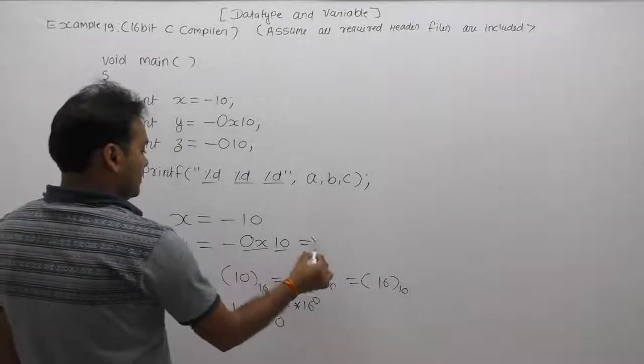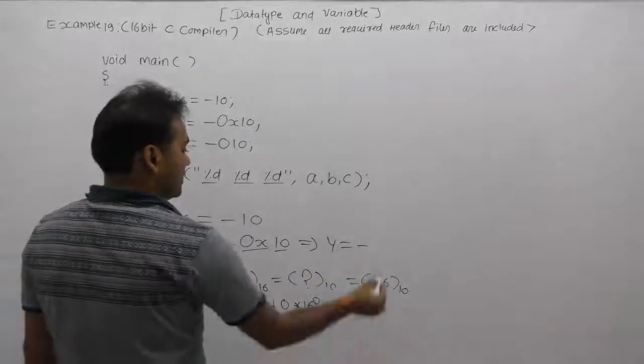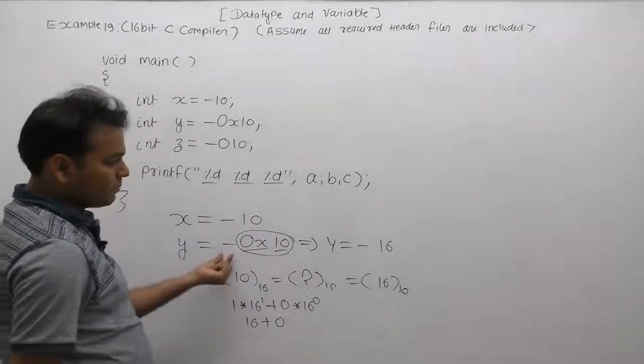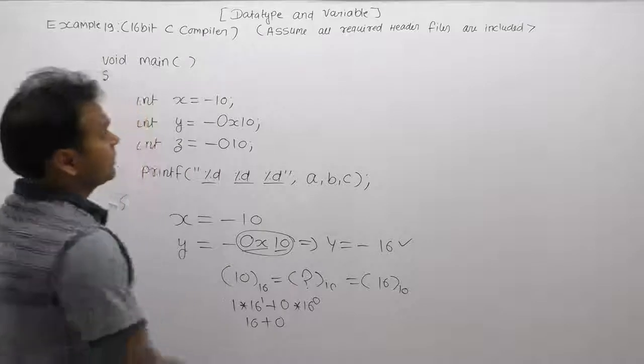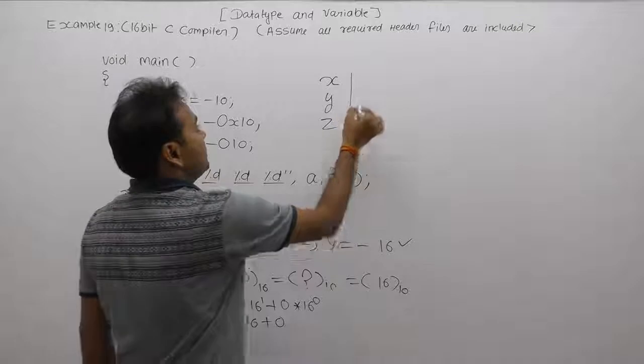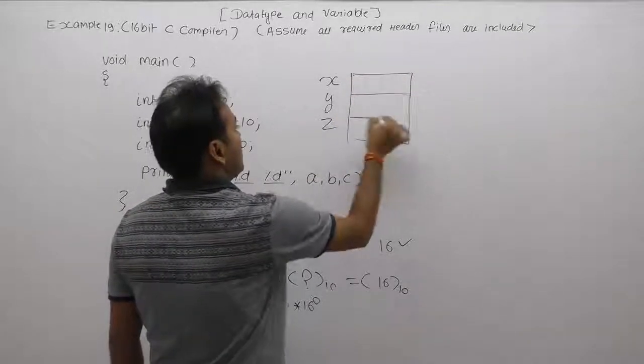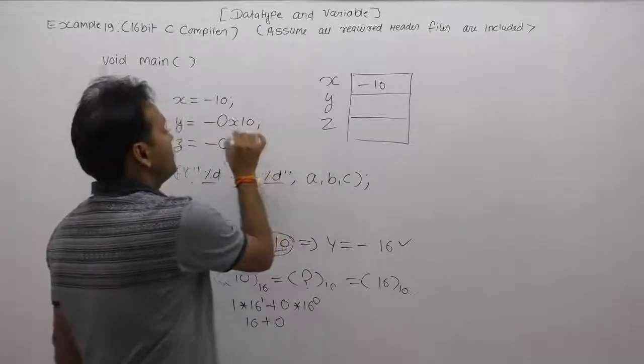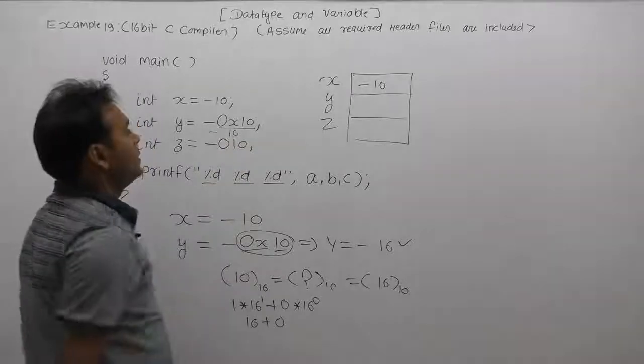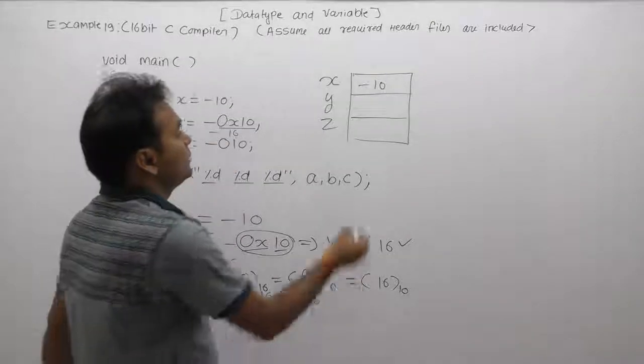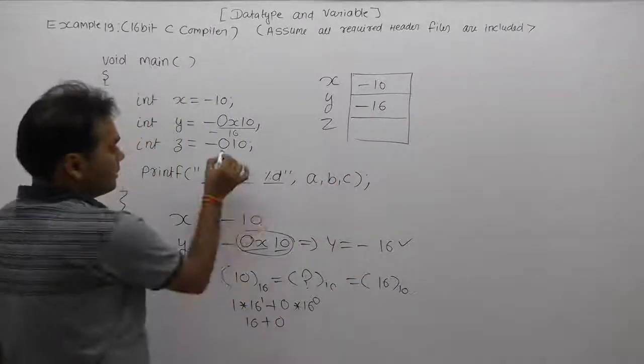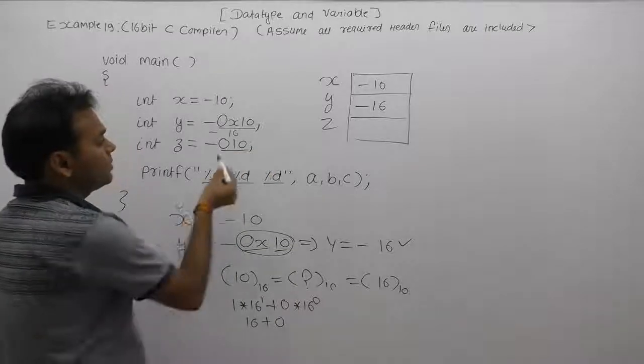Y equals to assigning minus 0x10. The value of x is minus 10, the value of y is equivalent to 16, therefore it is equivalent to minus 16 because of the minus sign. Finally, y is minus 16.